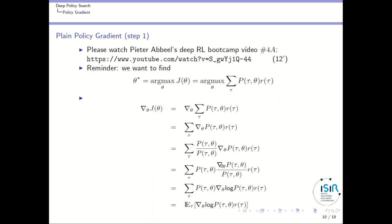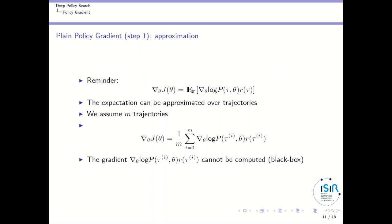This can be expressed as the gradient of theta of the log of p of tau given theta, because when you derive the log you get the gradient divided by the function. Here you can recognize the expectation formula — specifically, the expectation of the gradient over theta of the log of the probability of the trajectories times the return of the trajectory. We have reorganized the expression to get an expectation again. We then approximate this expectation using m trajectories, taking 1 over m times the sum over those m trajectories of that expression.